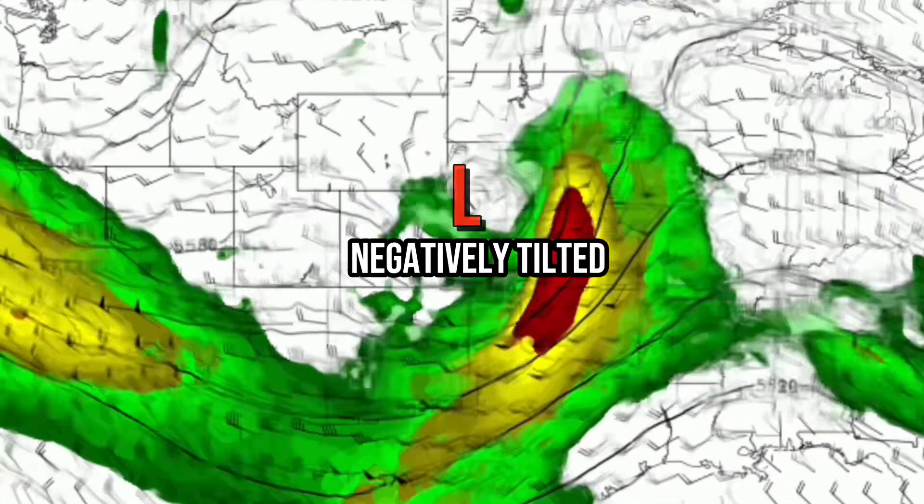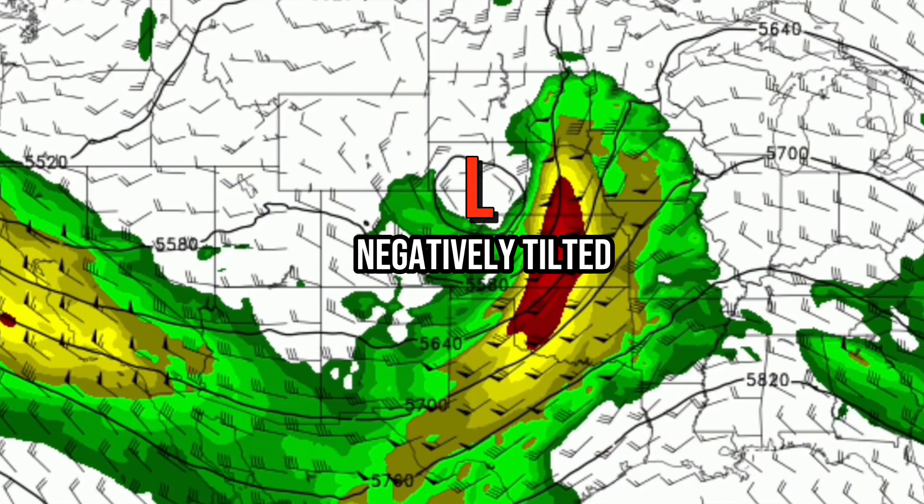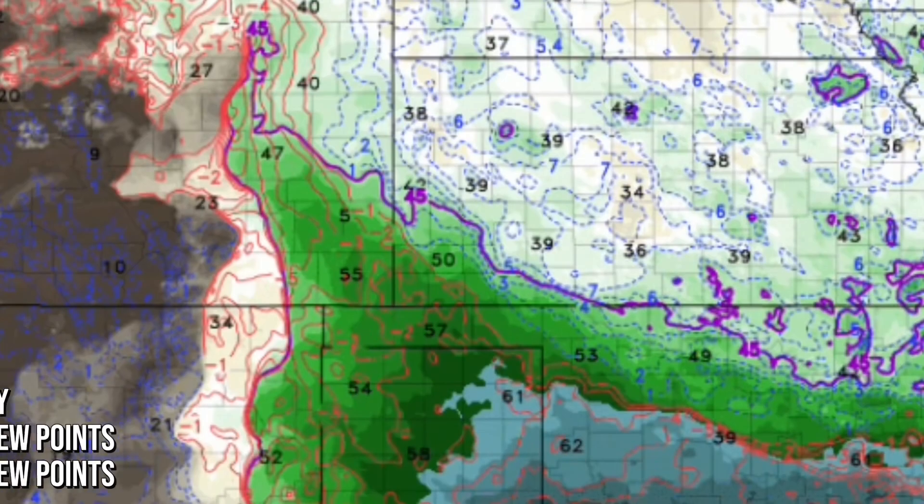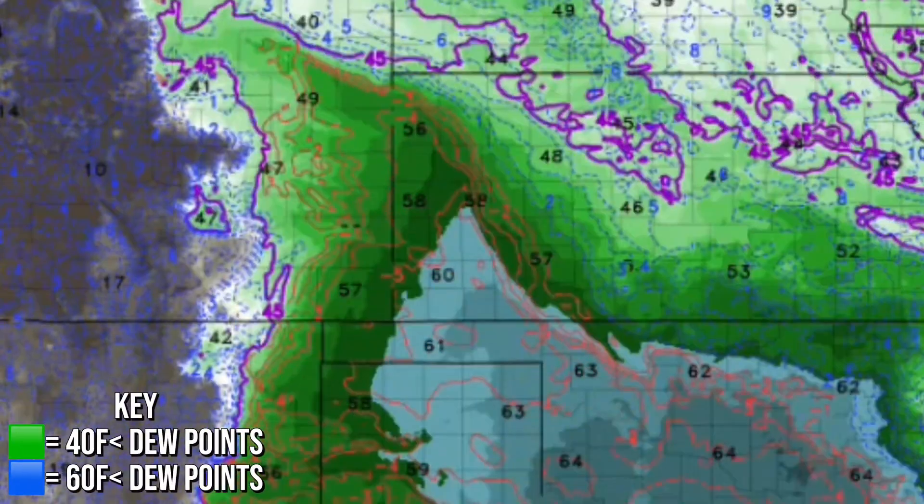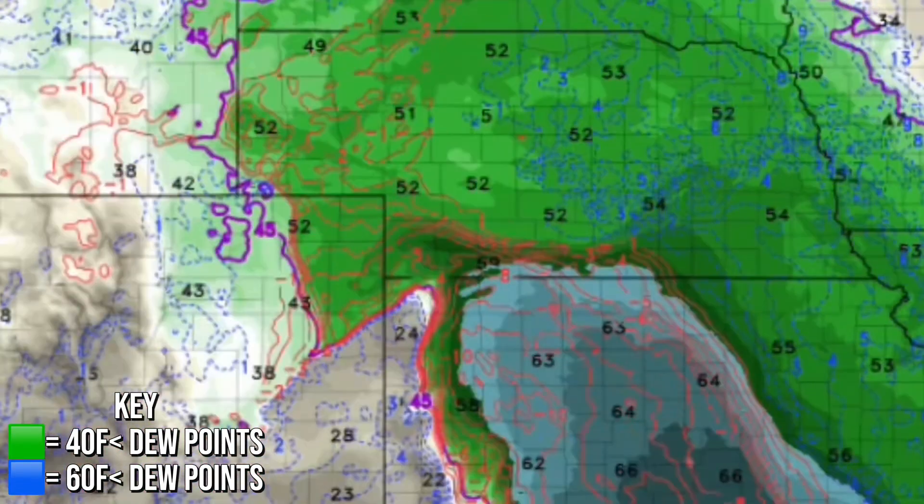On Thursday, a negative tilt trough will begin to push northeast to the central plains, with a low pressure forming in northeast Colorado. During this, a warm front will form in Oklahoma and Texas and begin to push northwest with a surge of low to mid 60 degree dew points into Kansas and northeast Colorado.